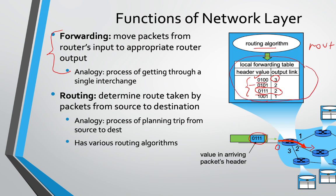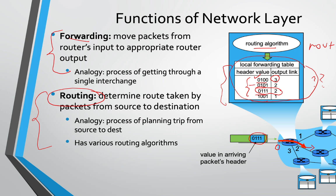The routing table is built using a routing algorithm or protocol. The process of building the table and making decisions based on it is known as routing. Forwarding is relatively simple — just deciding which port to transfer the packet to. Routing is the complicated part: how does the router learn about all the networks? Where does that information come from? We'll look into that later.